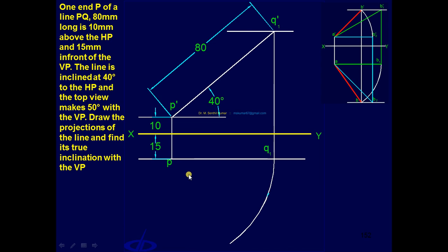We will be completing the top view. The next step is, the top view makes an angle of 50 degrees. So through P, draw a 50 degree line. That way you can get Q. Darken PQ - that is nothing but the final top view. So one part is over.